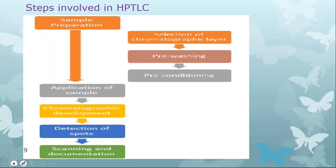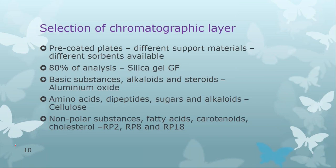For selection of chromatographic layers — unlike classical column chromatography where adsorbent is prepared manually — in HPTLC, pre-coated plates are used. Different support materials are available; the most commonly used are aluminum sheets. Different sorbents are available; the most common is silica gel, and 80% of analysis is done with silica gel GF254 — silica gel with a binder (gypsum) and a fluorescent indicator. When placed under a UV lamp, the whole plate fluoresces, and non-fluorescent substances appear as dark bands.